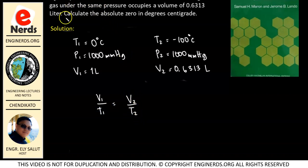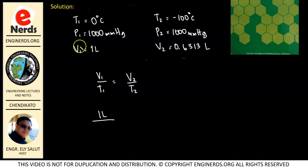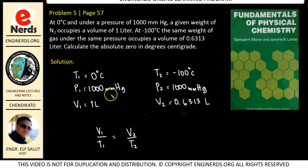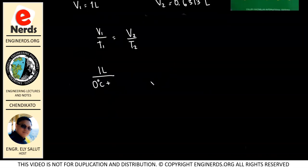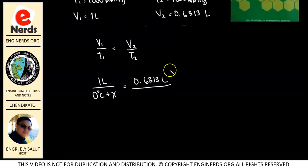We have to find the absolute zero in degrees centigrade. Let us substitute our given values. V1 is 1 liter, and T1 is 0 degrees Celsius plus X, where X is the variable representing absolute zero. This equals V2, which is 0.6313 liters, divided by T2, which is negative 100 degrees Celsius plus X.